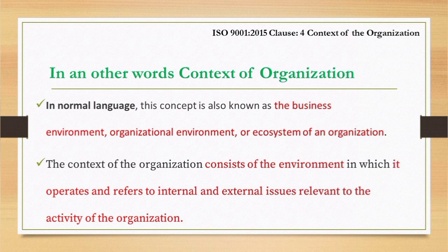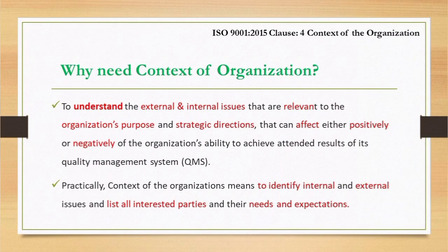It refers to the internal and external issues relevant to the activities of the organization. Why do we need the context of the organization? Context of the organization is necessary to understand the external and internal issues relevant to the organization's purpose, and the organization's measures and strategic directions, as they can affect either positively or negatively the organization's ability to achieve intended results of its quality management system.